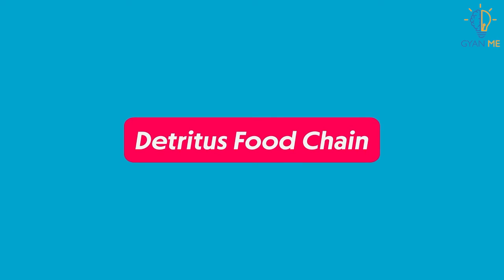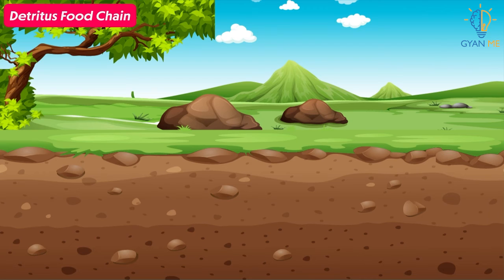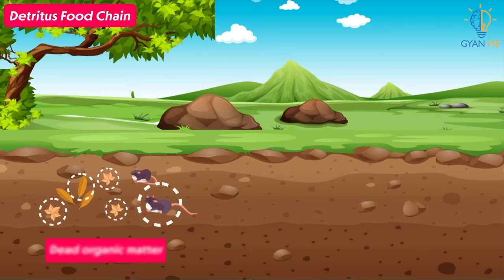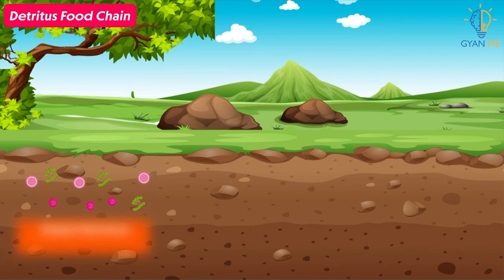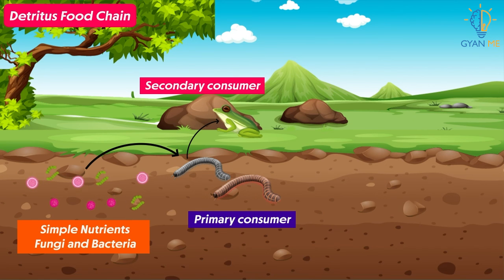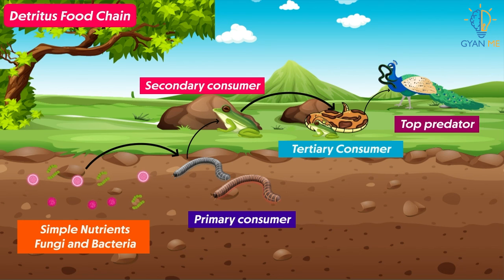Now let us see the detritus food chain. This type of food chain starts from dead organic matter — it does not start with producers. It starts with dead organic matter being decayed by organisms called decomposers. The dead organic matter is broken down into simple nutrients by microorganisms like fungi and bacteria. These simple nutrients and the decomposing organisms are then consumed by smaller carnivores, which in turn become food for larger carnivores. A similar detritus food chain also exists in the aquatic ecosystem.